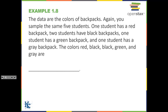The data are the color of backpacks — you sample the same five students: one has a red backpack, two have black backpacks, one has a green backpack, and one has a gray backpack. The colors are red, black, black, green, and gray. Because we're talking about colors — colors are not numbers, they're labels — this would be qualitative data.